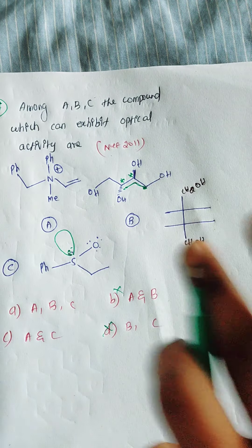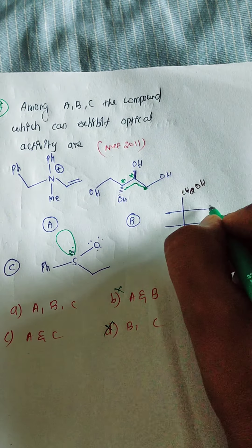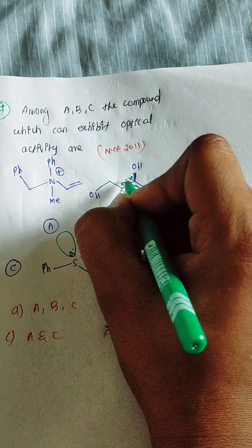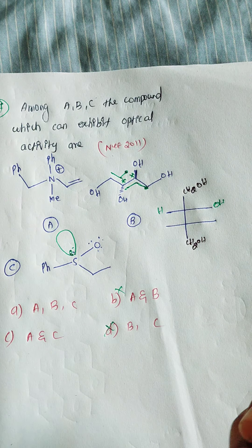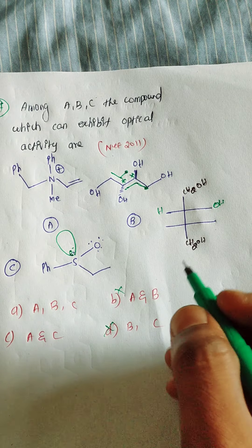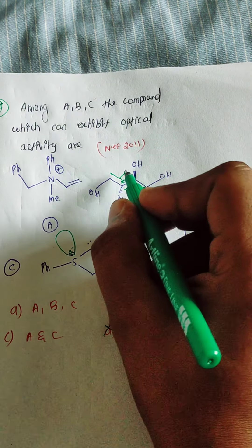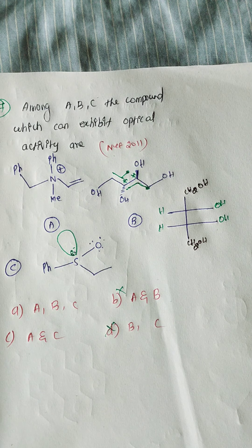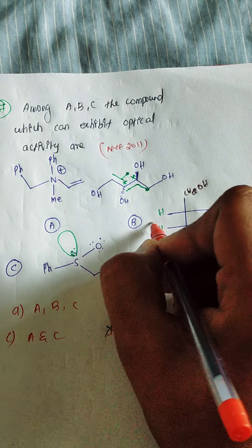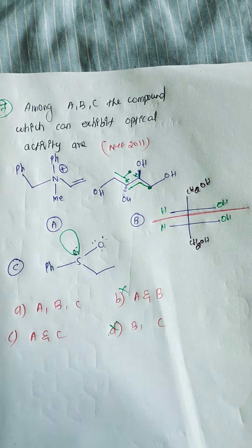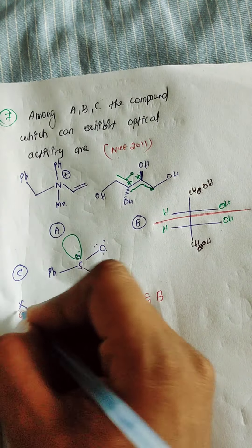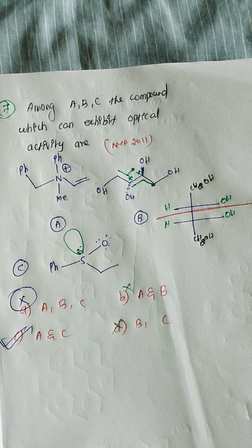Looking at the molecule: on one chiral center, the right-hand side group is above the plane and the left-hand side hydrogen is below the plane. On the other chiral center, the left-hand side is above the plane and the right-hand side is hydrogen. The molecule is a meso compound — it is optically inactive. So option B is optically inactive and is eliminated.